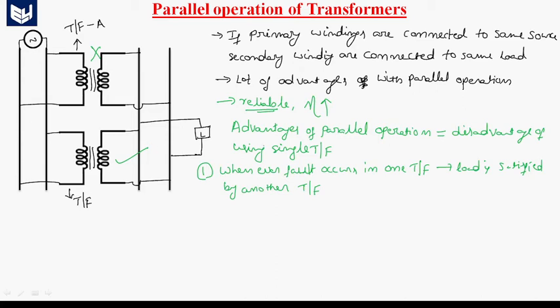By the parallel operation of transformers, we can give more reliable power to the consumer. Nowadays, with the increase in population, the load demand is also increasing. Whenever the load demand is increasing, it is difficult to exchange the transformers regularly.